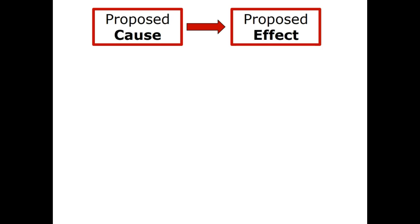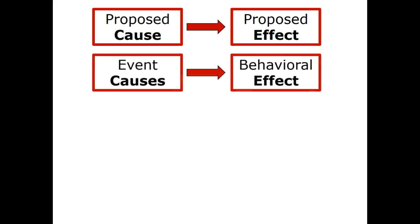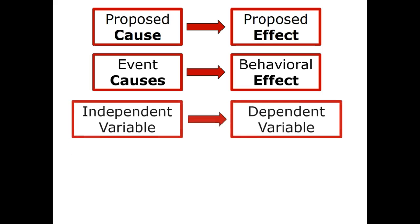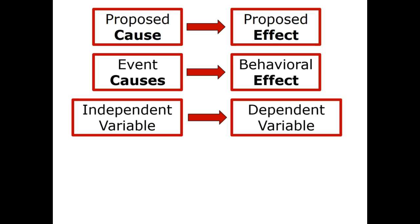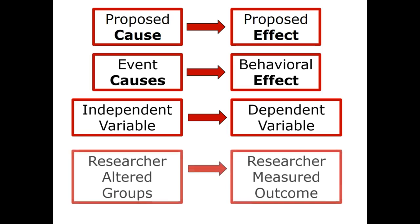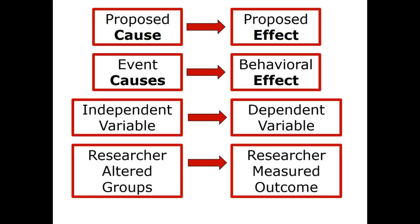It is very helpful to always keep in mind that the point of conducting a true experiment is to investigate the cause and effect relationship between variables. Researchers make predictions about the cause and effect relationship between an environmental event and behavior. The proposed cause is the independent variable, and the proposed effect is the dependent variable. Researchers are predicting the behavioral effect is dependent on the event, so they alter the environment of the different groups of participants and then measure the outcome.